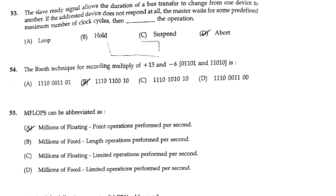The slave ready signal allows the duration of a bus transfer to change from one device to another. If the addressed device does not respond at all, the master waits for some predefined maximum number of clock cycles, then aborts the operation.